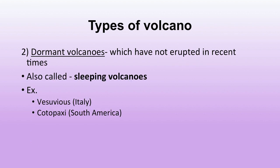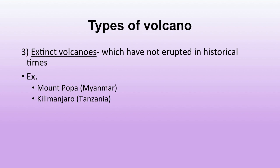The second type is dormant volcano — also known as sleeping volcano — which has not erupted in historical times. Examples include Mount Popa and Mount Kilimanjaro.